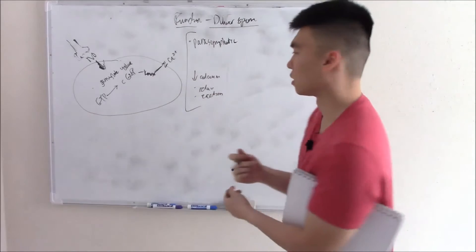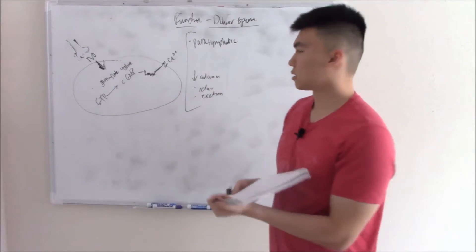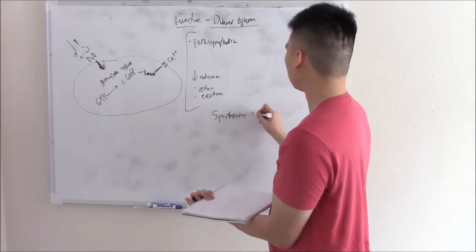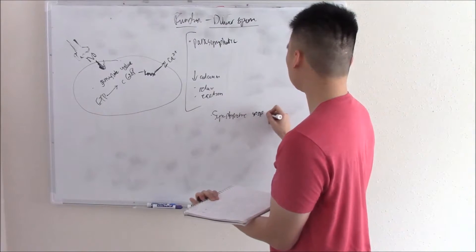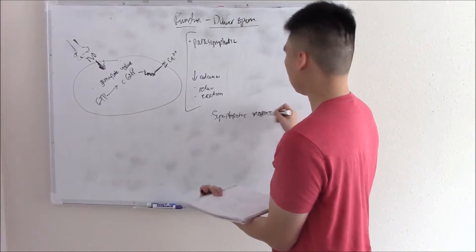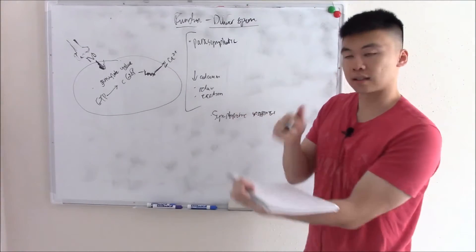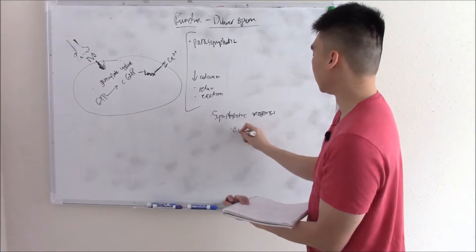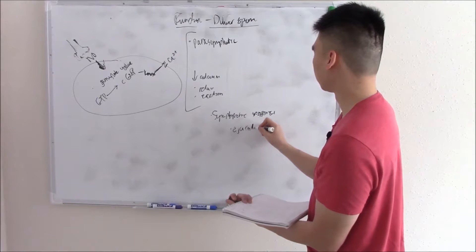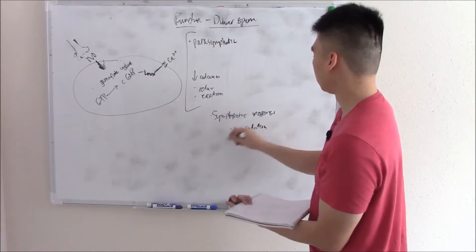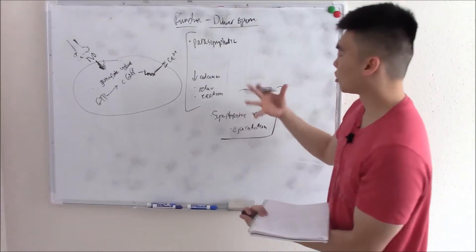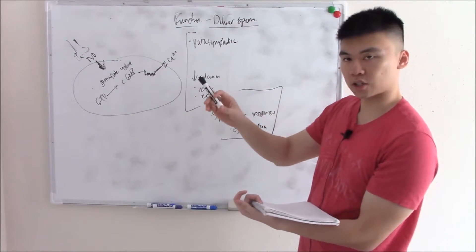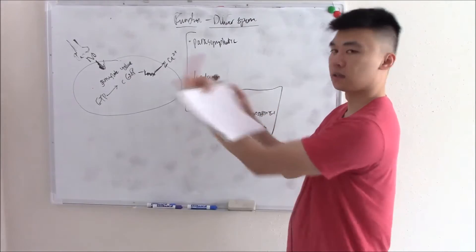So that's your parasympathetic response. Your sympathetic response causes ducts like your vas deferens and your ejaculatory ducts to contract and you ejaculate. So your sympathetic response is dealing with ejaculation. Those are the two main big ones - your parasympathetic which causes you to have an erection, and your sympathetic response to ejaculate the sperm.